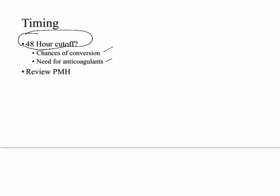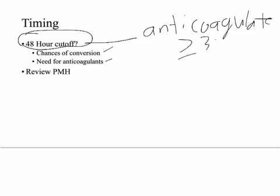If it's after the 48-hour window, you need to anticoagulate for at least three weeks. This can typically be done with newer oral anticoagulants such as a direct factor Xa inhibitor or a direct thrombin inhibitor. The exact anticoagulant depends on how long they'll need to stay on it and the cost. If it's just for those three weeks, one of the newer Xa inhibitors would be your best choice.